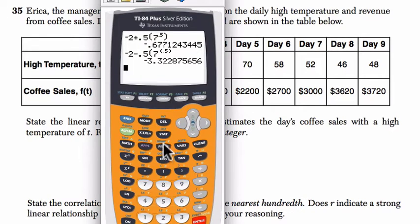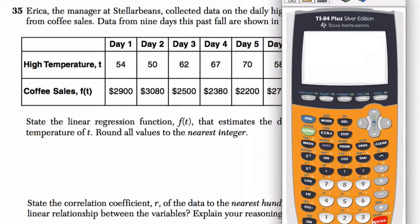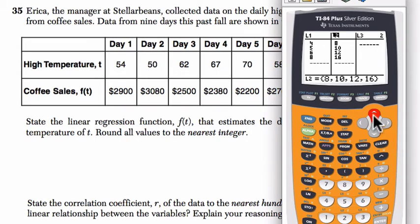So here on the graphing calculator, we can set this up by going to stat, and we want to edit our lists. We might have some lists here already, so we'll clear them off. Go to the top, hit clear and enter, and then up here, clear and enter.